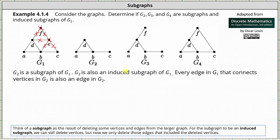And G2 is also an induced subgraph of G1. If we take a look at the work that we just used to form the graph of G2, notice how the only edges that we deleted included the deleted vertices, indicating G2 is an induced subgraph of G1. Or more formally, G2 is an induced subgraph of G1 because every edge in G1 that connects the vertices in G2 is also an edge in G2.